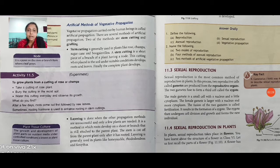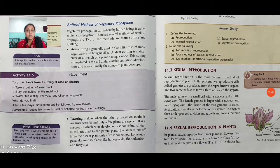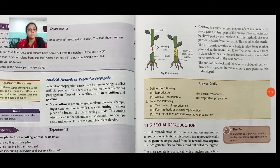In this layering method, when we remove the unsuccessful plant and cut the stem from the parent plant, this process is called layering.